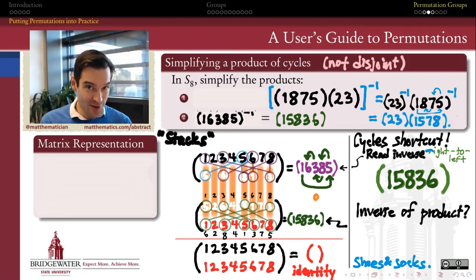If the cycles were disjoint, it turns out that the order doesn't matter, right, because disjoint cycles commute. But even if they weren't disjoint, I could still use shoes and socks to say that the inverse of a product is the product of the inverses in the opposite order. And then for each of those inverses, the inverse of a cycle is a cycle that we get just by reading the original cycle backwards from right to left instead of from left to right.